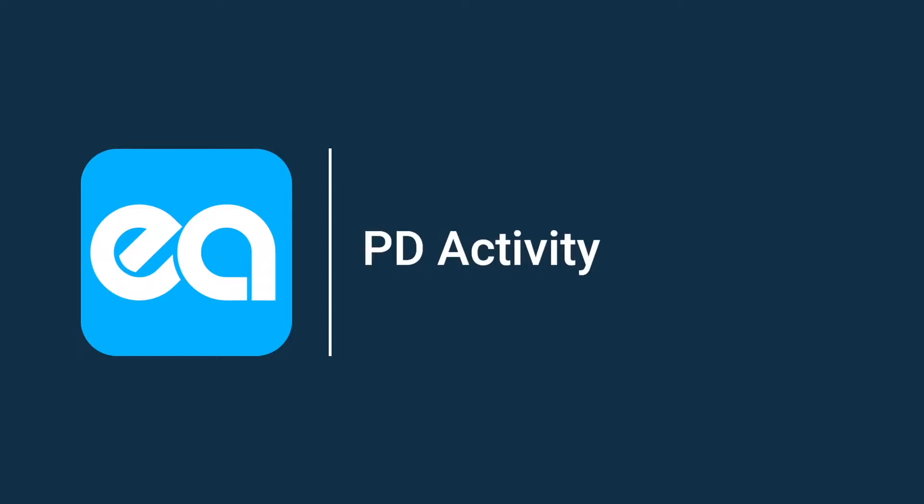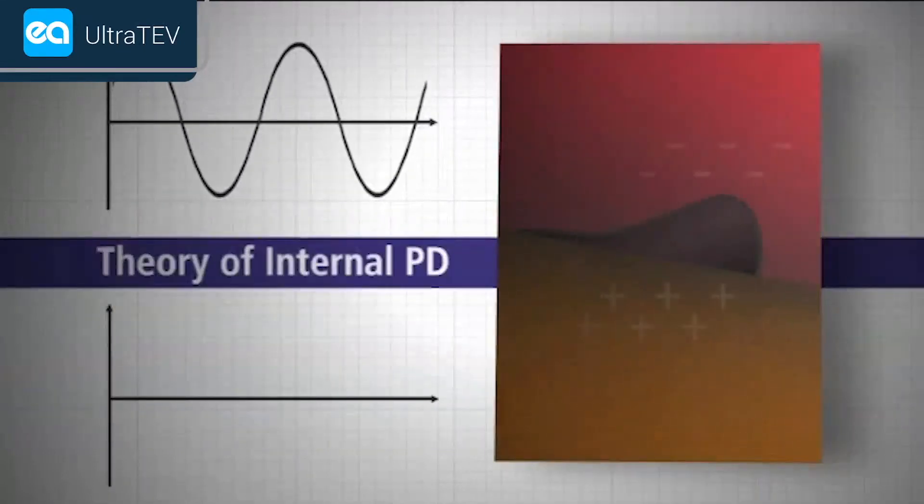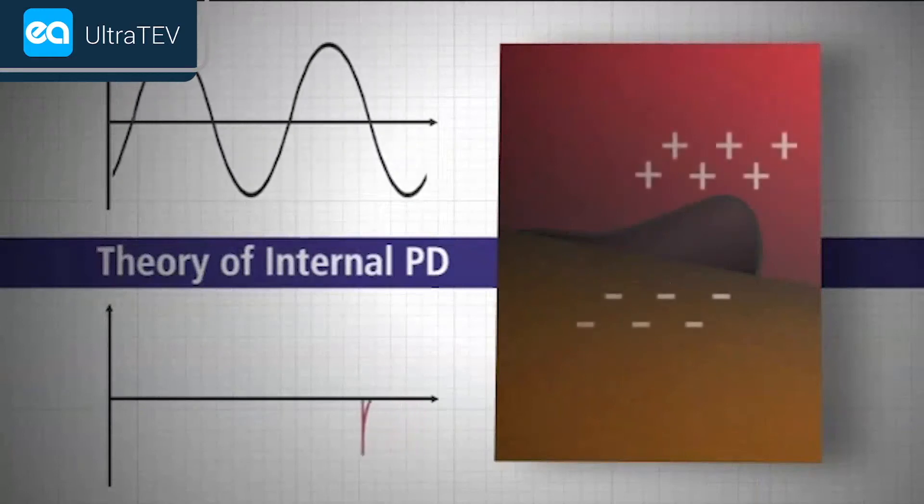PD activity can occur at any point in the insulation system where the electric field strength exceeds the breakdown strength of that portion of the insulating material.